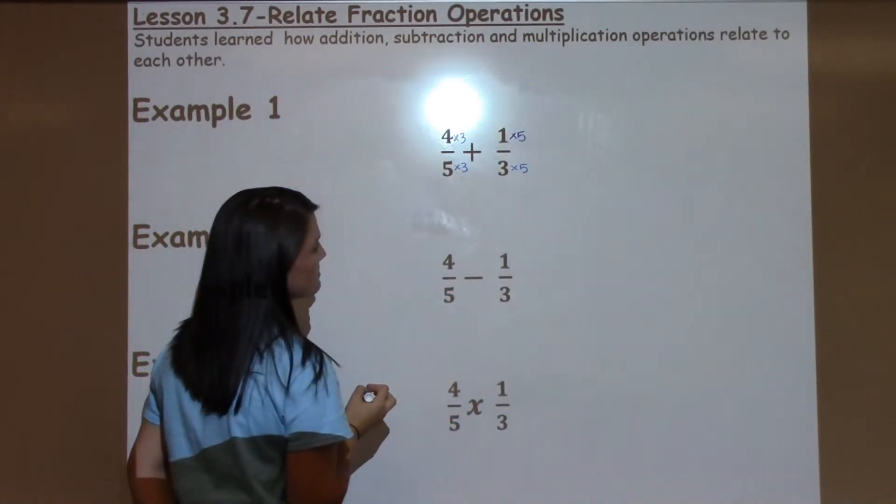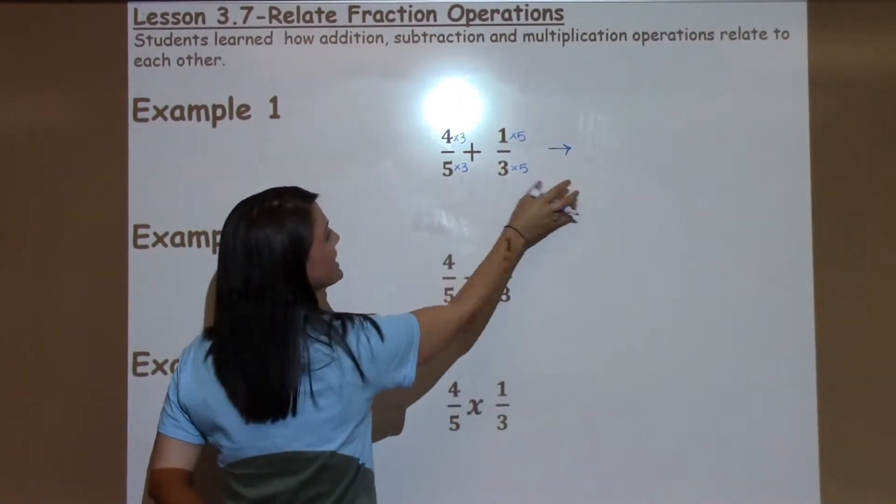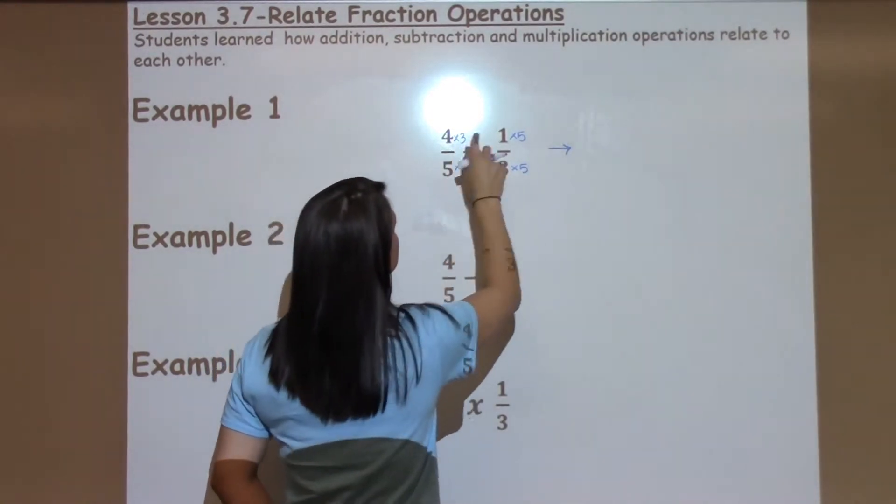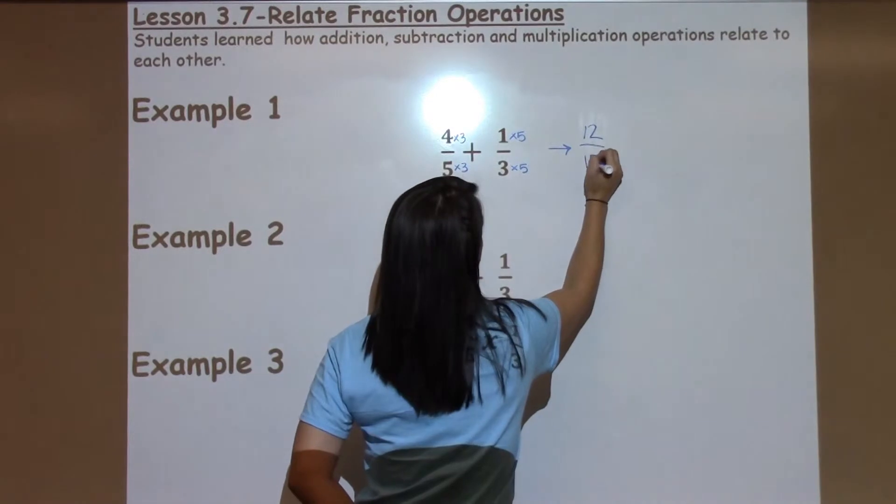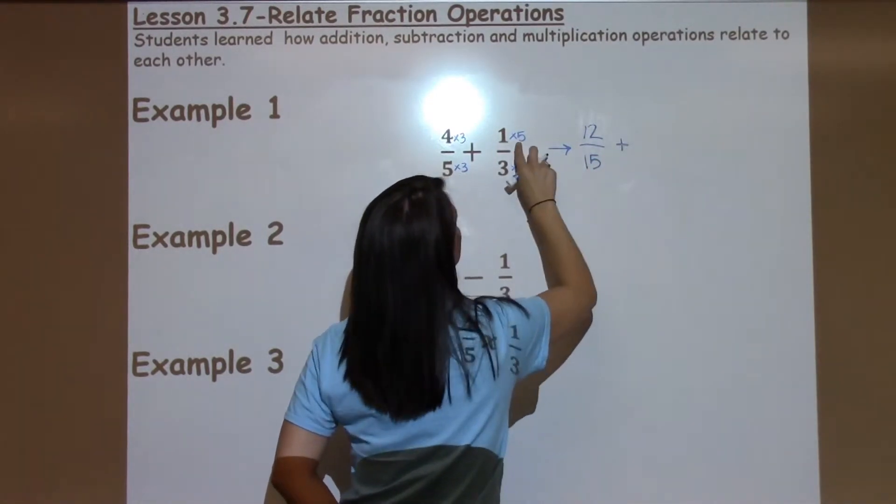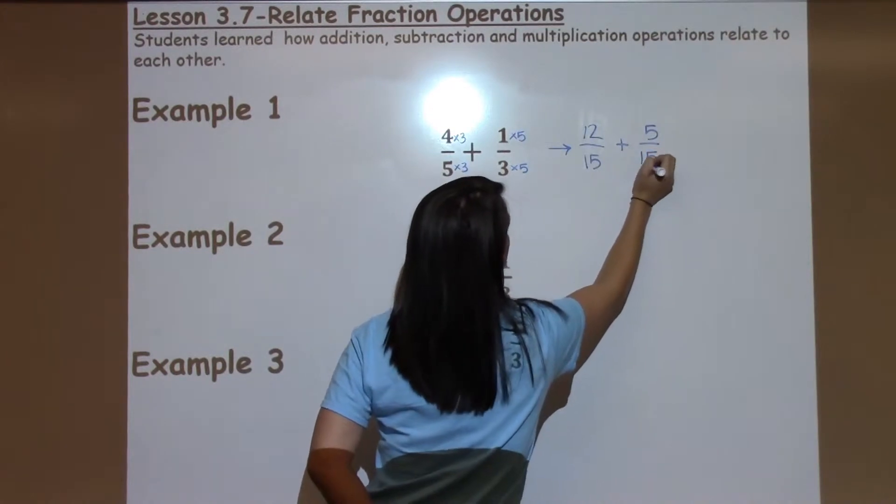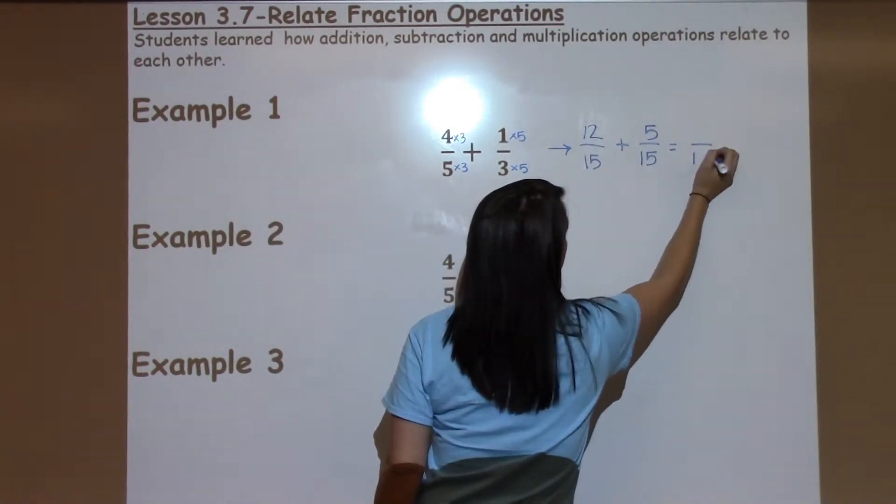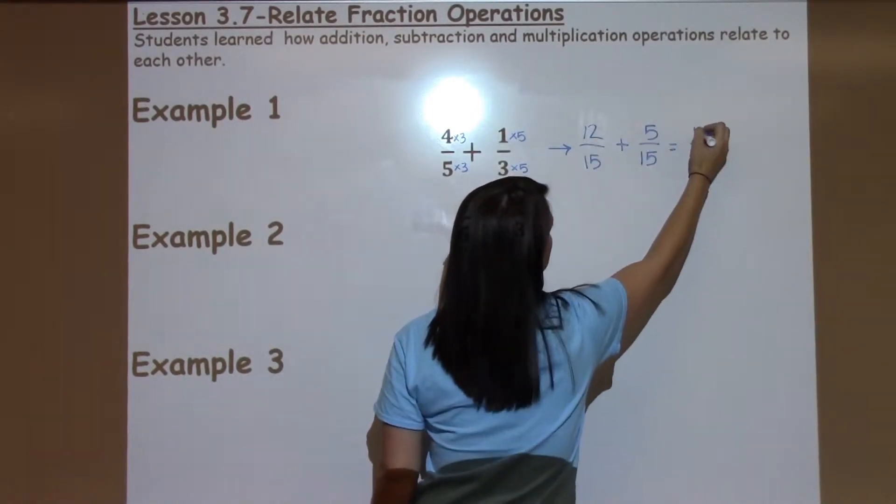And then I get to rewrite my new fractions. Sometimes students like to rewrite their fractions off to the side. Some students like to write them below. Whatever strategy works best. 4 times 3 is 12, 5 times 3 is 15. Plus 1 times 5 is 5, and 3 times 5 is 15. Now I'm able to keep the denominators the same and just add the tops. 12 plus 5 is 17.